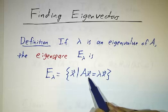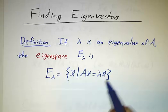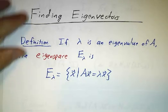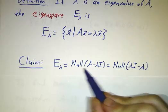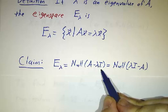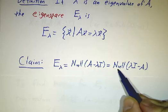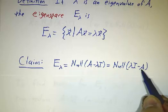And so we need to figure out what this eigenspace looks like. And I claim that an eigenspace is actually a null space. It's a null space of the matrix A minus λ times the identity. Or if you prefer, it's a null space of λ times the identity minus A.